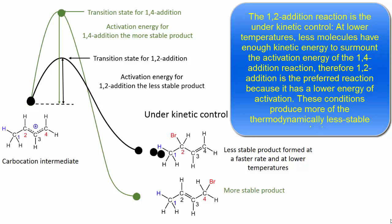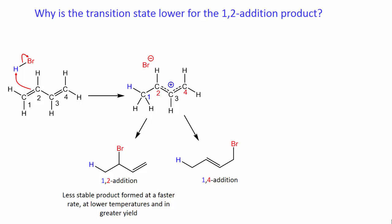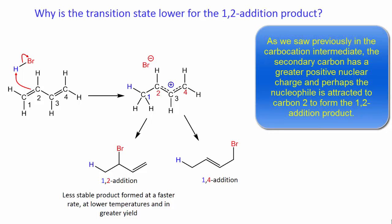At lower temperatures, fewer molecules have enough kinetic energy to surmount the activation energy of the 1,4-addition reaction. Therefore, the 1,2-addition is the preferred reaction because it has a lower energy of activation. These conditions produce more of the thermodynamically less stable product. Why is the transition state lower for the 1,2-addition product? As we saw previously in the carbocation intermediate, the secondary carbon has the greatest positive nuclear charge, and perhaps the nucleophile is attracted to carbon 2 to form the 1,2-addition product.